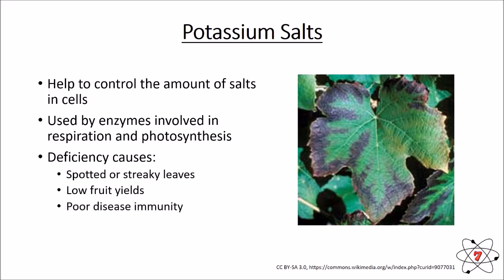Plants that don't have enough potassium are generally more likely to become ill — they're not going to have immunity to disease. Plants are just like animals in this respect: they can become ill, they can become diseased. So potassium is actually part of their immune system.